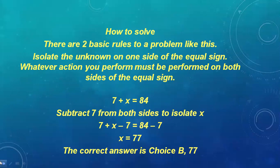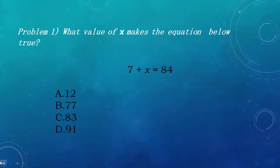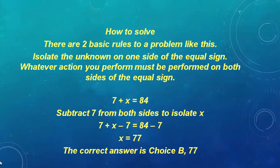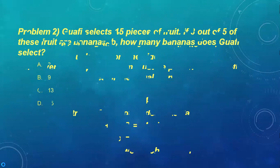For the equation 7 plus x equals 84, to isolate x, we subtract 7 from both sides of the equation and finally we get x equals 77. So the correct answer for this problem is option B, 77. This is known as the isolation rule of algebra.